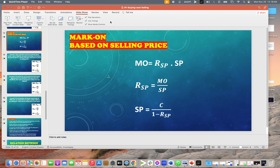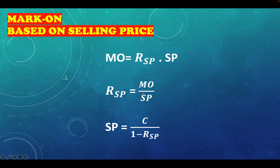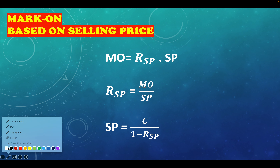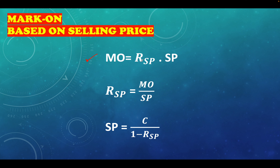This is the continuation. We'll now be talking about mark-on based on selling price. So in the mark-on based on the selling price, these are the formulas that we use. If you are looking for the mark-on rate based on selling price and the selling price is given, we'll use this formula. If looking for the rate based on selling price while the mark-on and selling price are given, we'll use this one. And if we're looking for the selling price while the cost and the rate based on selling price is given, we'll use this one. We can always derive from those equations. Let us have our first example for the mark-on based on the selling price.